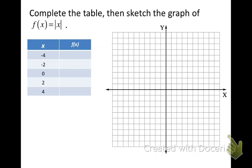First, let's go ahead and talk about that parent function for the absolute value family. The function y equals the absolute value of x — what would the graph look like and why? The easy way to figure out how this graph is going to look is to complete a table of values in which we input values for x and then take their absolute value.